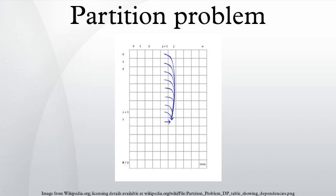P(i, j) is true if either P(i, j-1) is true or if P(i - Xj, j-1) is true. P(i, j) is false otherwise.